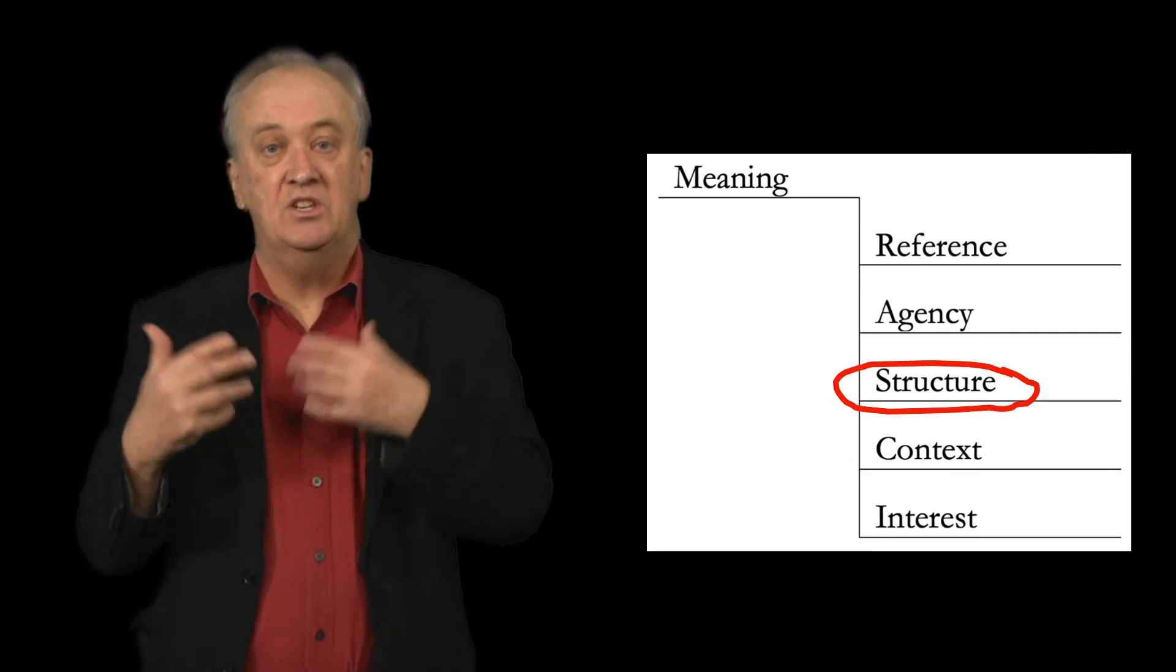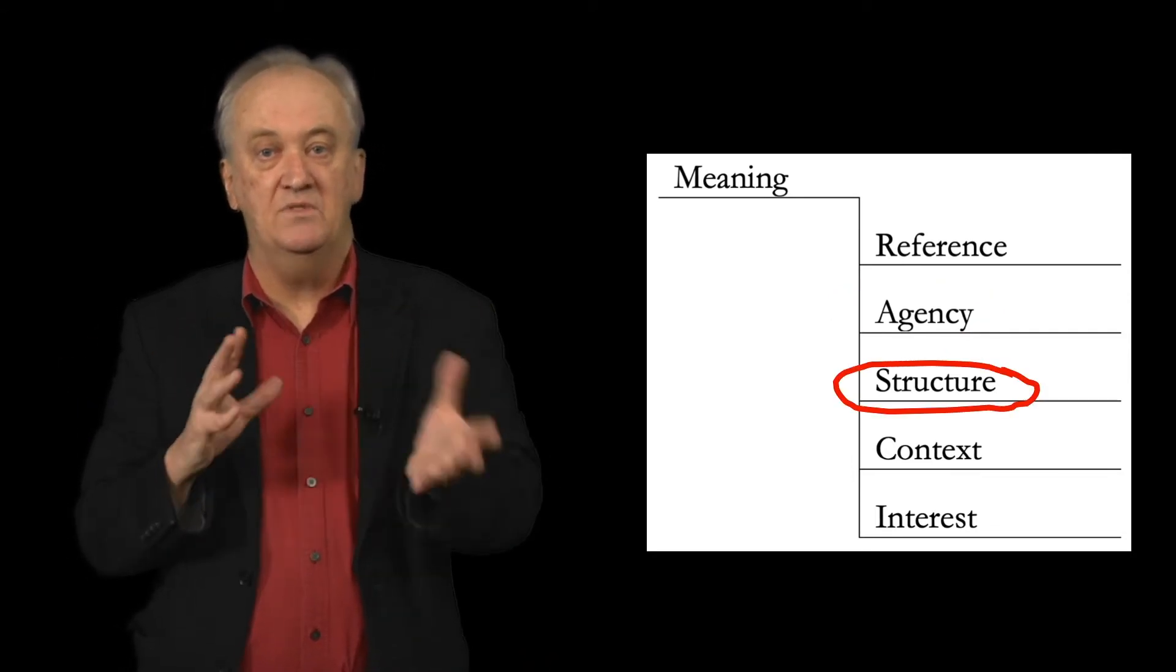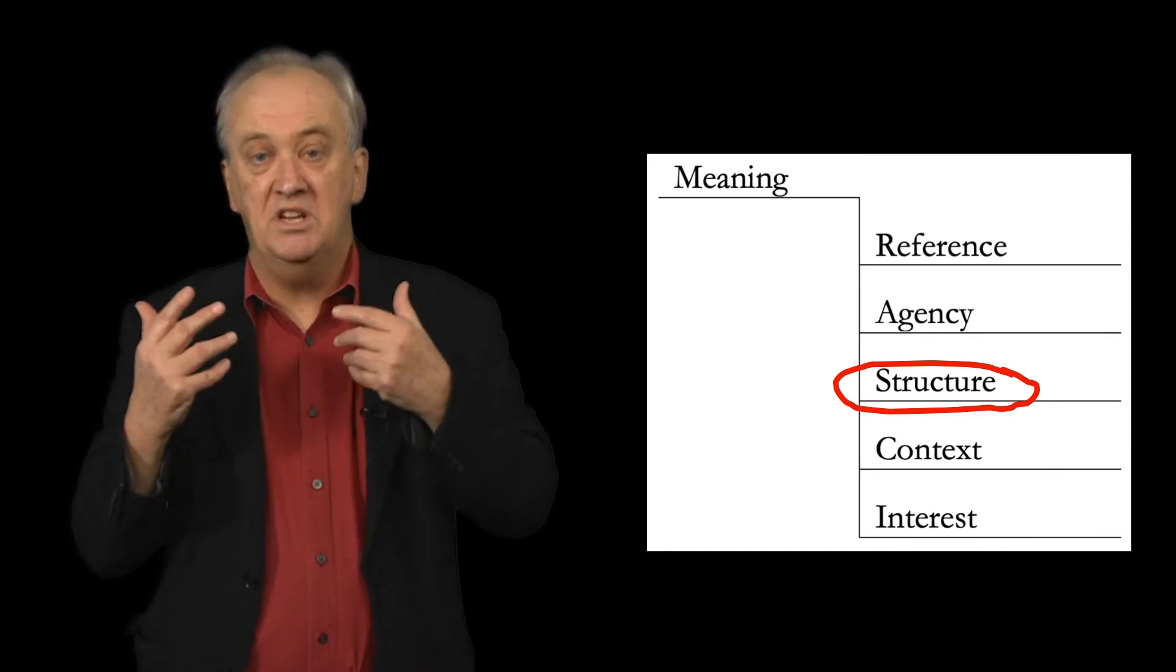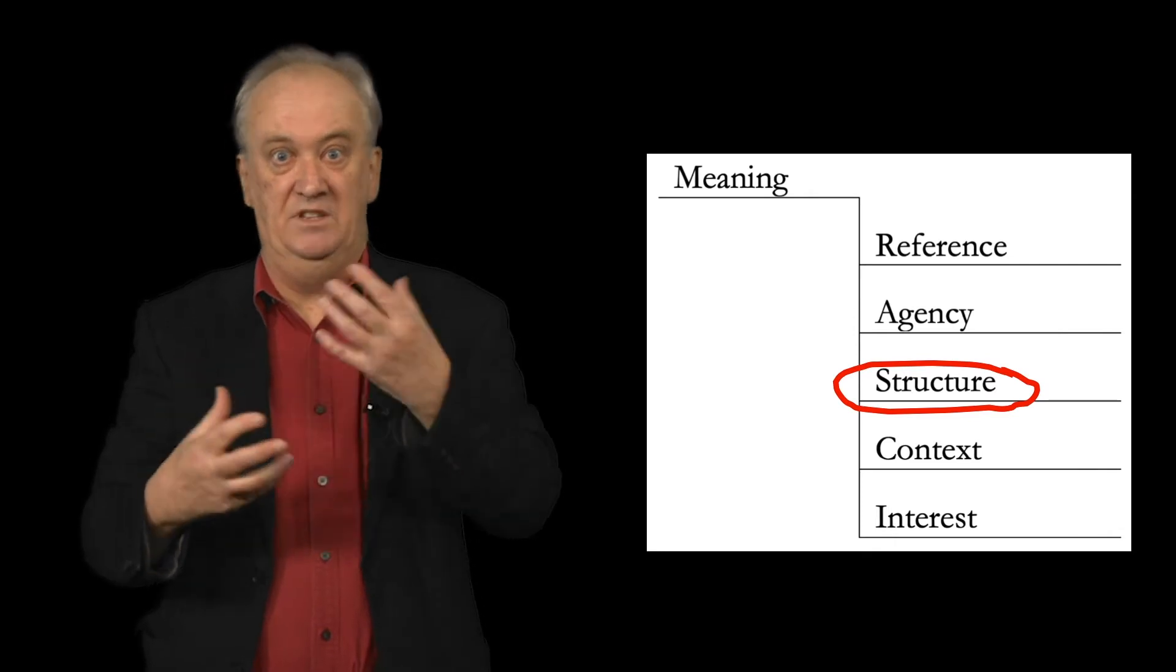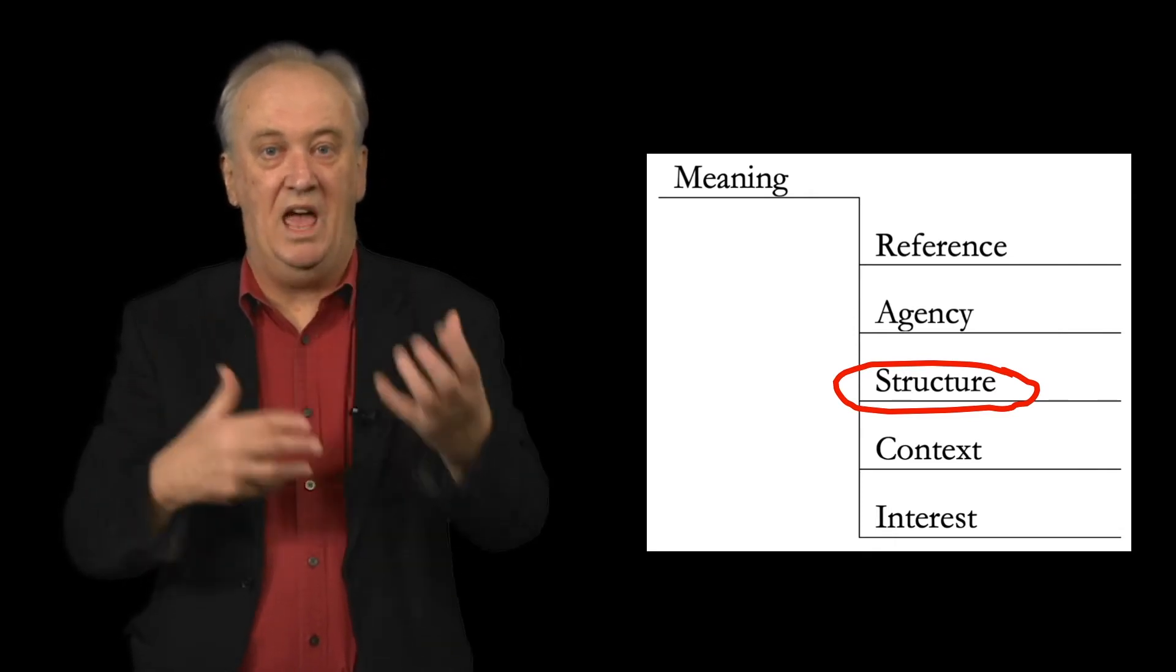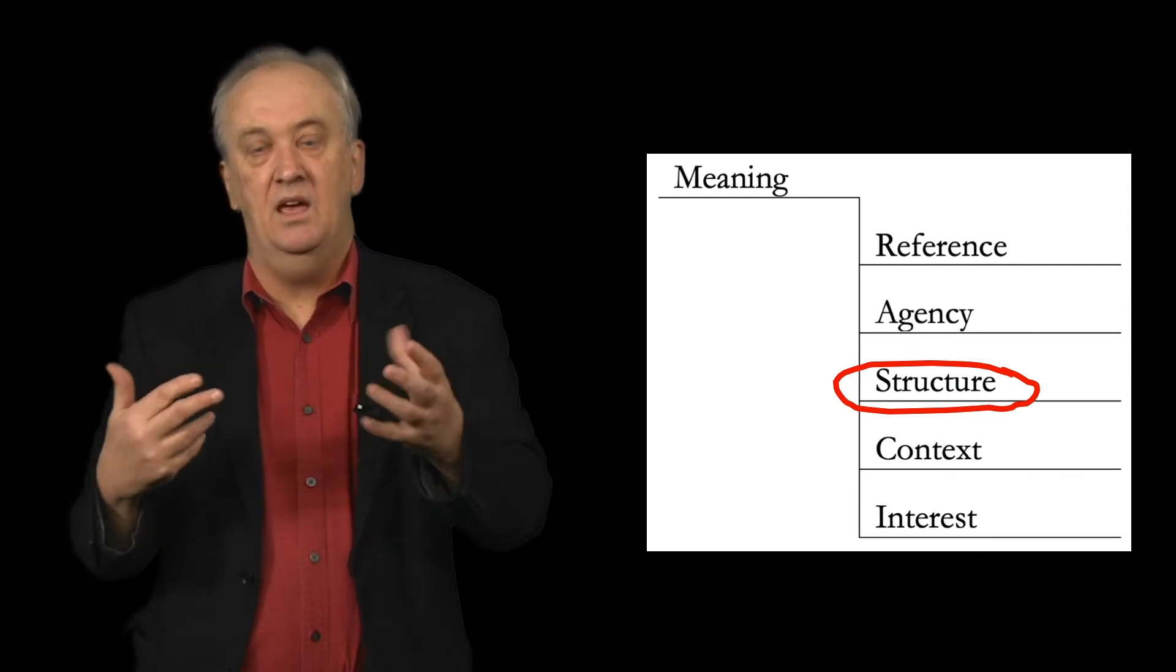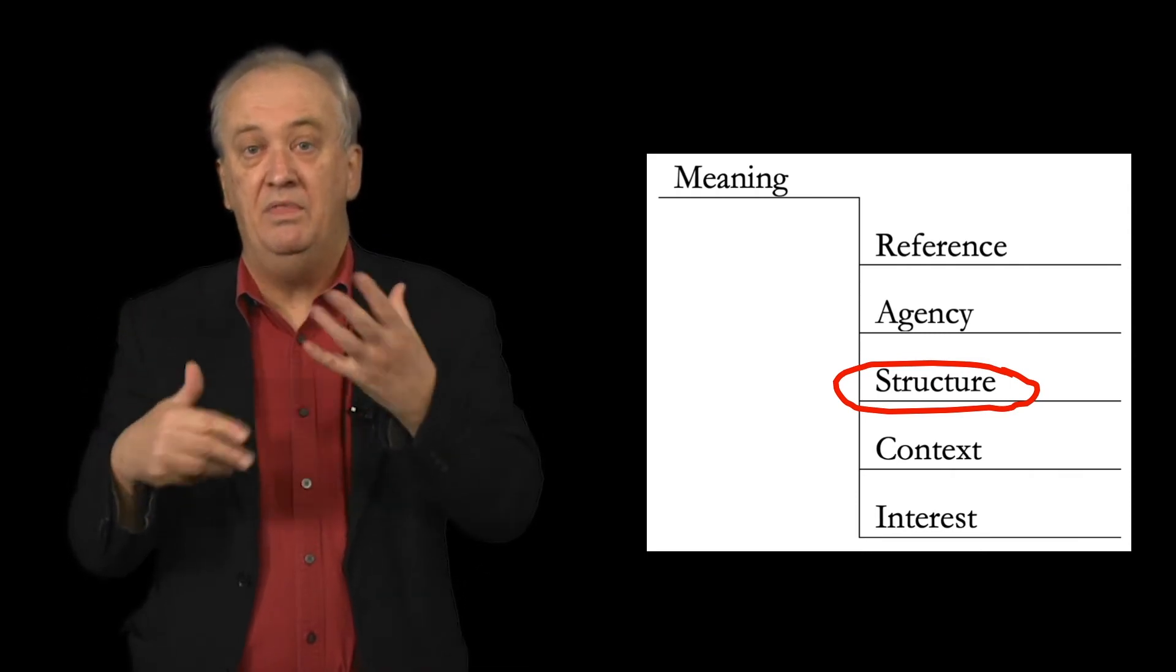Every meaning has a structure which gives it coherence, and this structure is a matter of design and the result that has both material aspects in the physical object of the meaning, the sound or the piece of text or the object, but also ideal aspects in the way in which we think about these things.